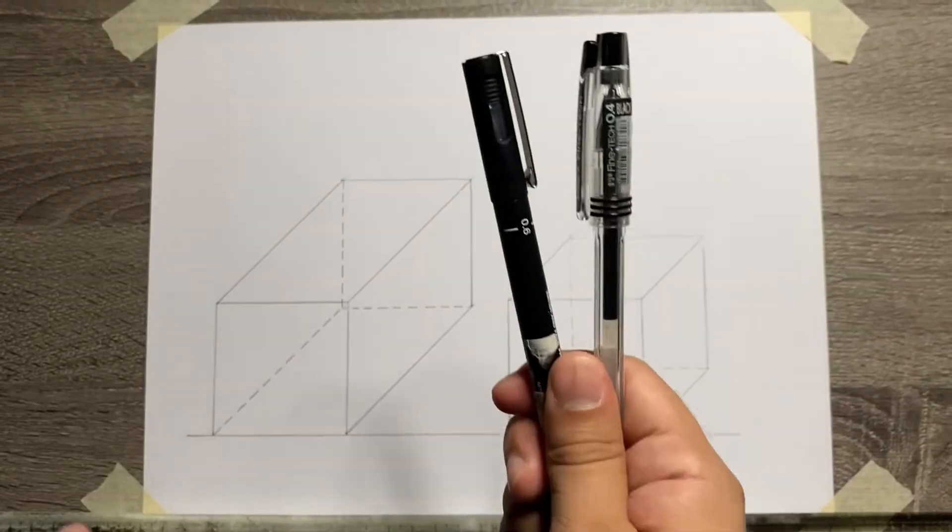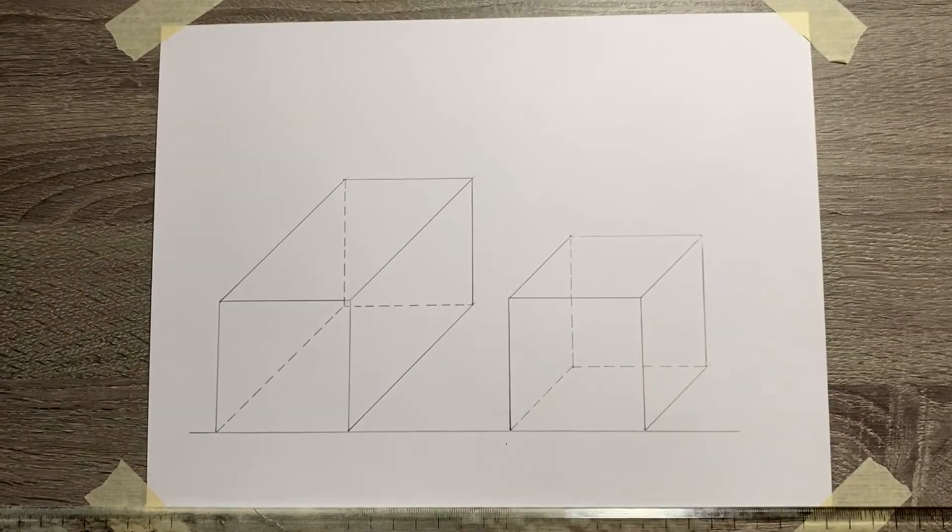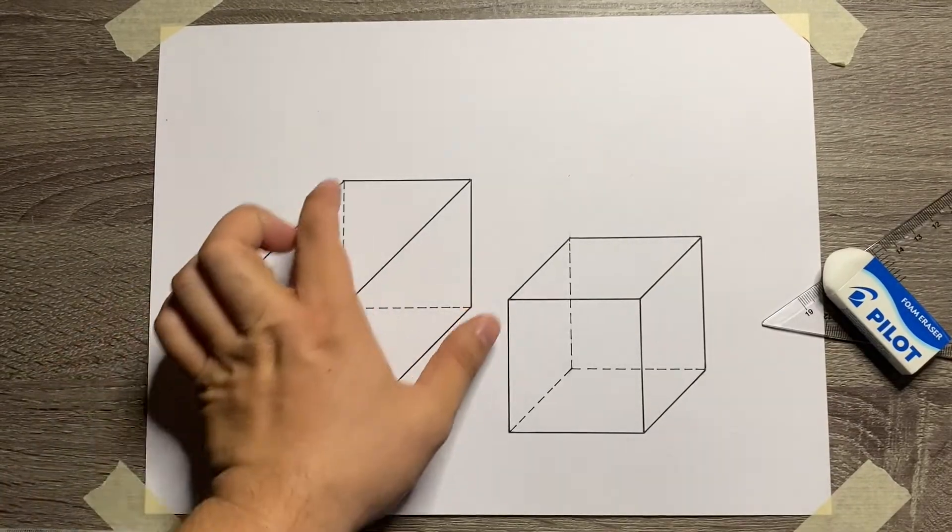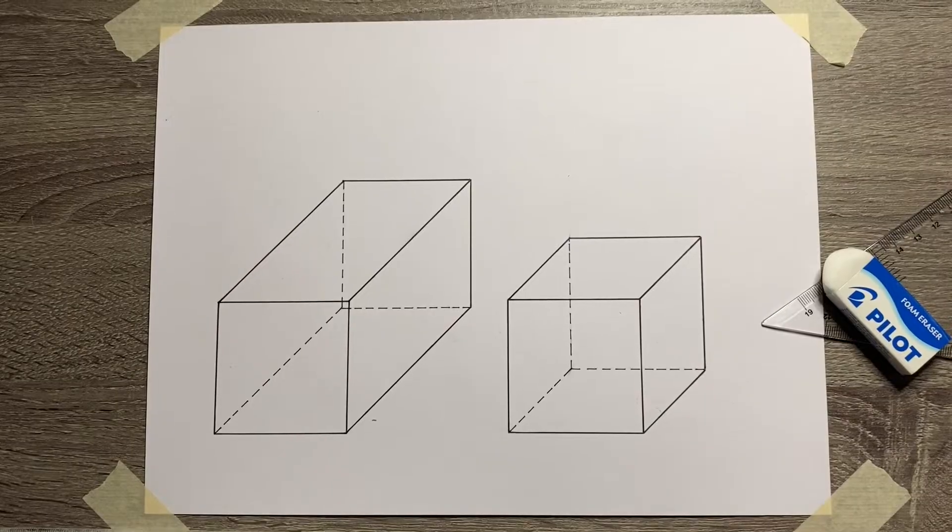And that's it, you're done also with your Cabinet Oblique drawing. Use your technical pen to finalize your output, then you're done. Thank you for watching.